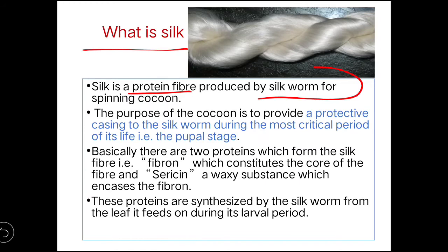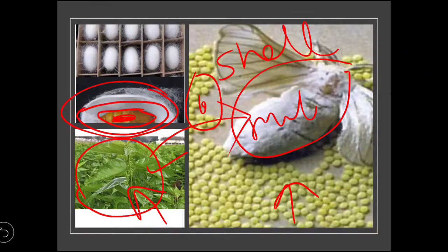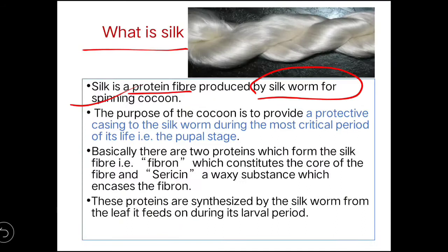Silk is a protein fiber produced by the silkworm for spinning the cocoon. The purpose of the cocoon is to provide a protective covering for the silkworm during the most critical period of its life — the pupal stage. At the pupal stage, the silkworm is inactive and cannot protect itself, so the main function of the cocoon is to provide protective casing.